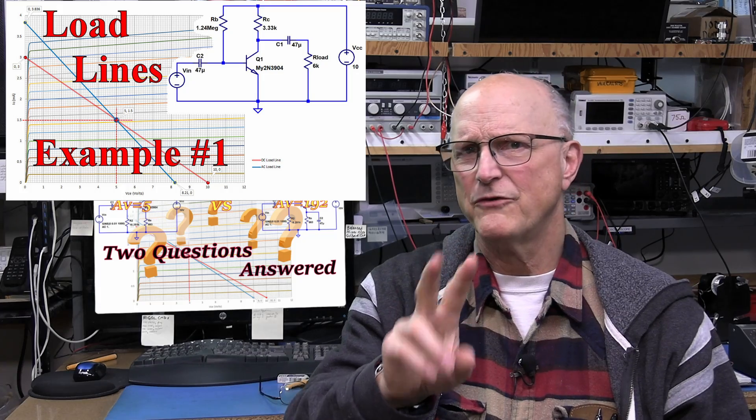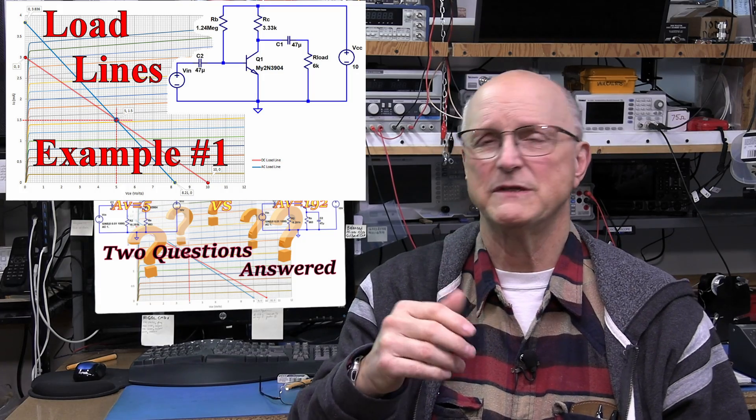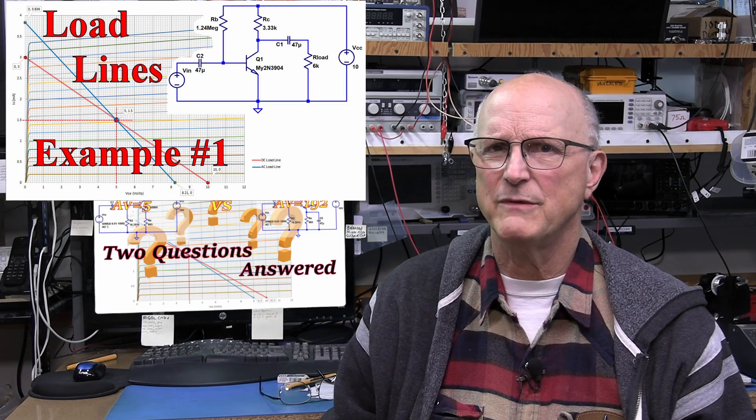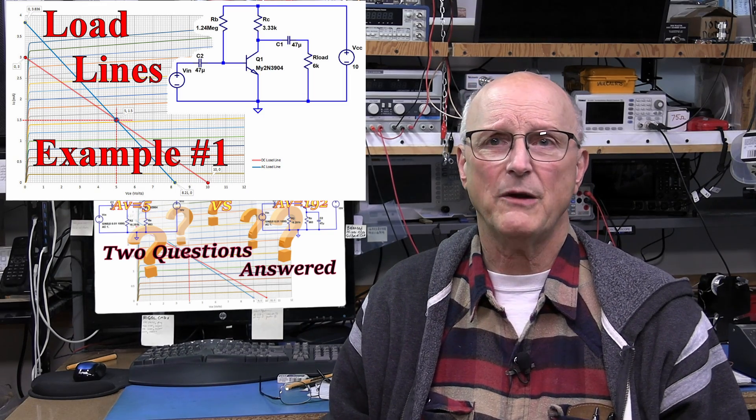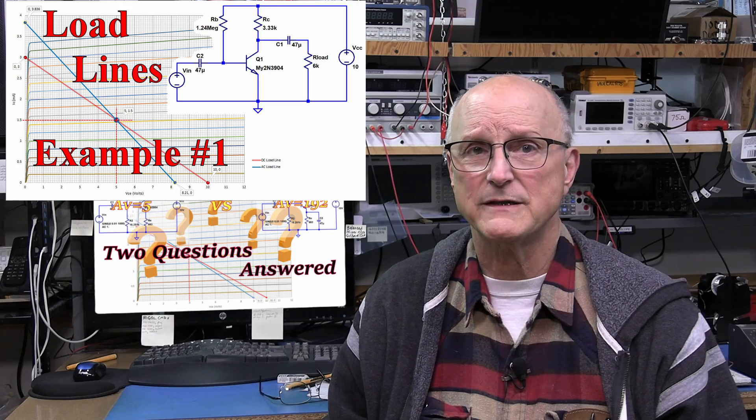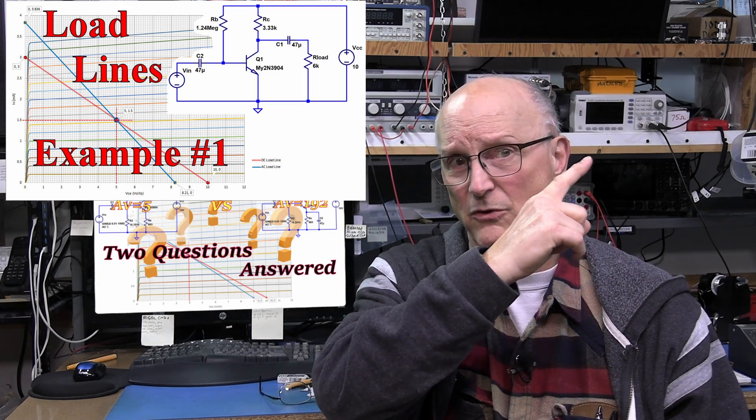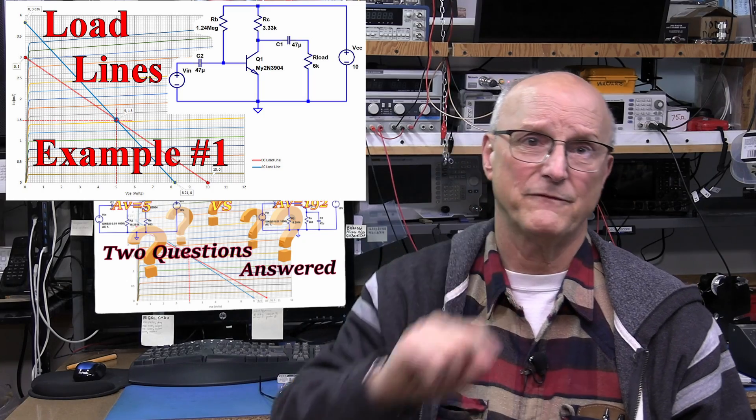In the second video, I walked through the process of setting up the DC and AC load lines for a very simple common emitter transistor circuit with a capacitively coupled load on its output. If you missed that one, there's a link up in the corner and down in the description.